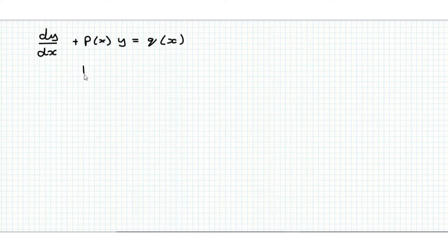What we do is we find an integrating factor called I, and we set this equal to e to the power of the integral of p(x) with respect to x. And then once we have this integrating factor,